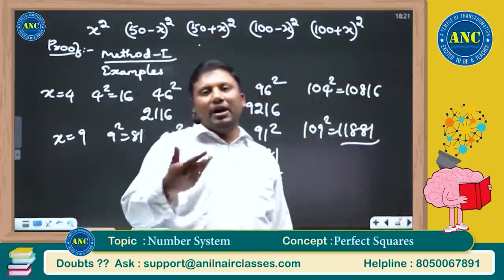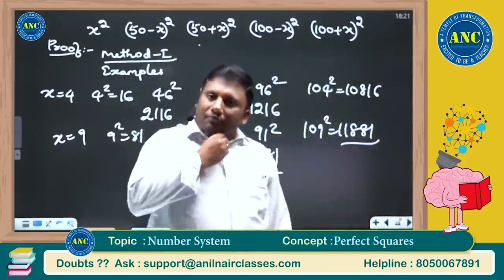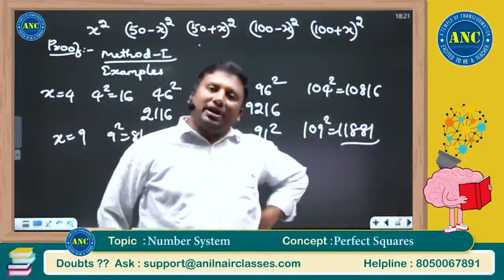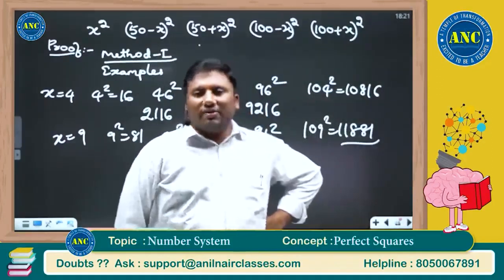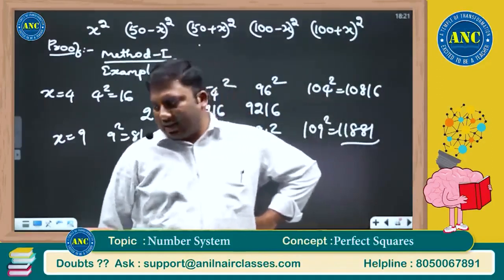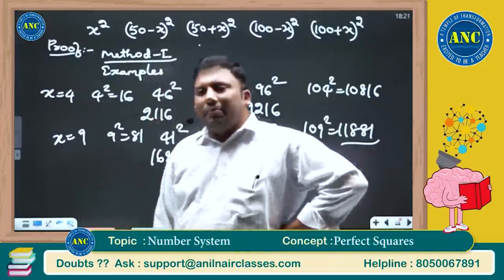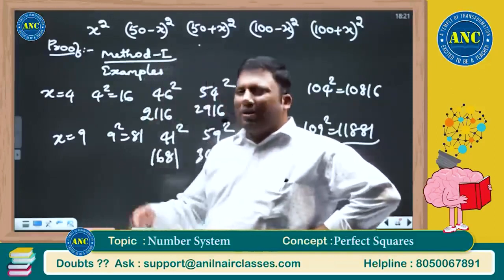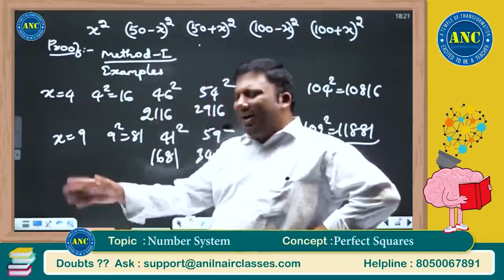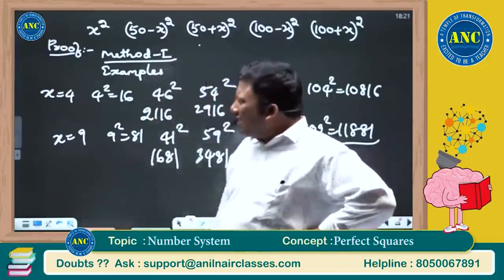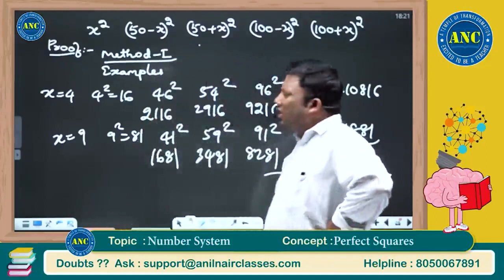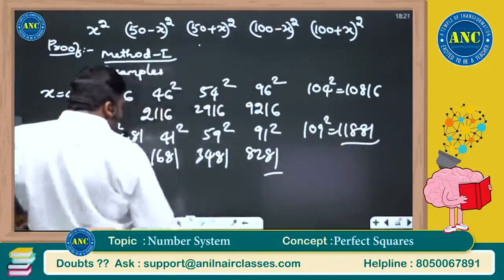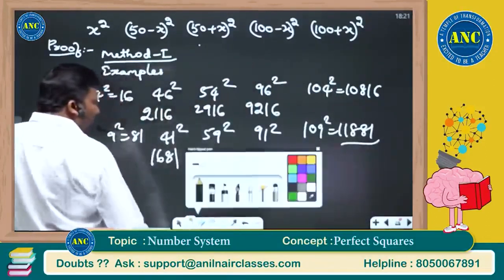If somebody asks you 414², you can say 171396. If somebody asks you 317², the answer is 100489. These are all two-second or three-second squarings of a three-digit number. The important point is that the last two digits are the same in all these cases.